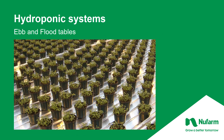Ebb and flood tables can be used in both hydroponic and soil-based systems. Simply stated, plants absorb water through the drain holes in the container as the bench fills from the bottom up with water from the reservoir. In this way, no irrigation water ever touches the plant's foliage, which is a plus for disease prevention. But because you're growing in a greenhouse, you have high humidity, and you still have wet plants, which can have foliar leaf issues.